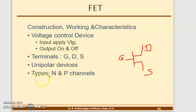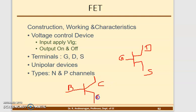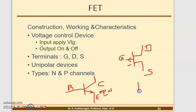The FET is classified into two types: N-channel and P-channel. Similar to transistors which have Base, Collector, and Emitter, FET also has three terminals. In a transistor, if the arrow on the emitter is in the outward direction, the center terminal is P, making it an NPN transistor. Similarly for FET, if the gate terminal arrow is in the outward direction, it is a P-channel FET.